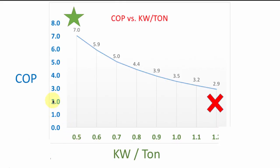Here's the same answer shown on a different type of chart. For KW per ton, you want a small number because that means it takes less power — less KW in — to produce a ton of cooling. For COP, you want a large number, which means more efficient equipment.